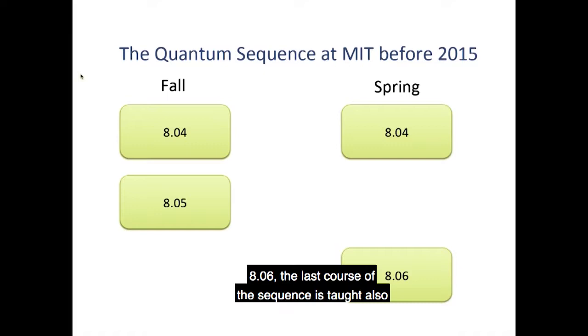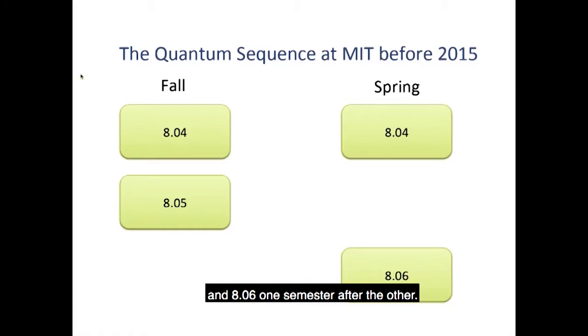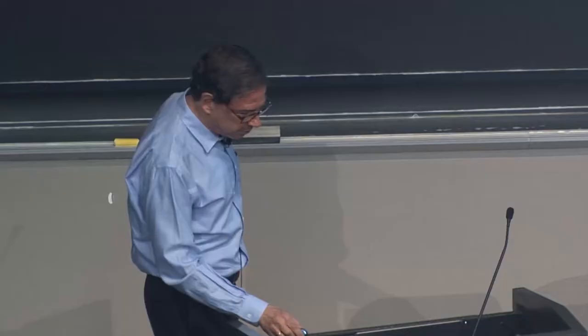806, the last course of the sequence, is taught also once a year. And a student can go from 804 to 805 and 806, one semester after the other.